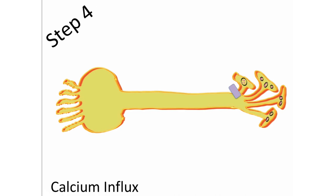As discussed in our previous video on exocytosis, most exocytosis is the result of the influx of calcium into cells. Keep in mind this neuron, even though it looks very different than most cells, is a cell — it's a nerve cell. And exocytosis in neurons is the result of calcium influx.